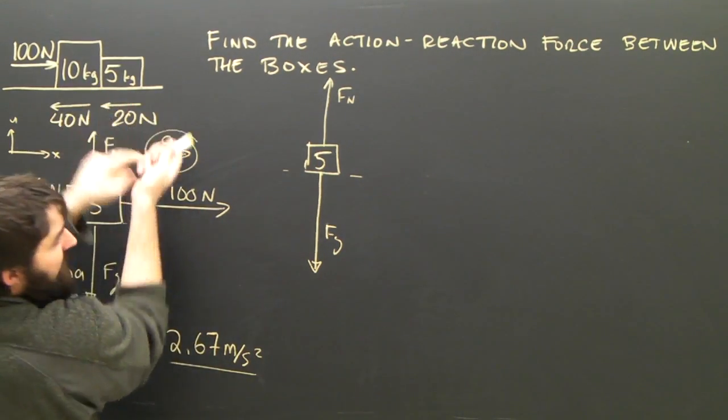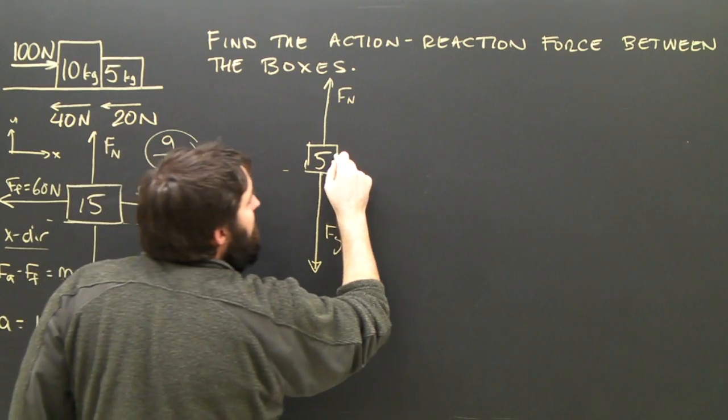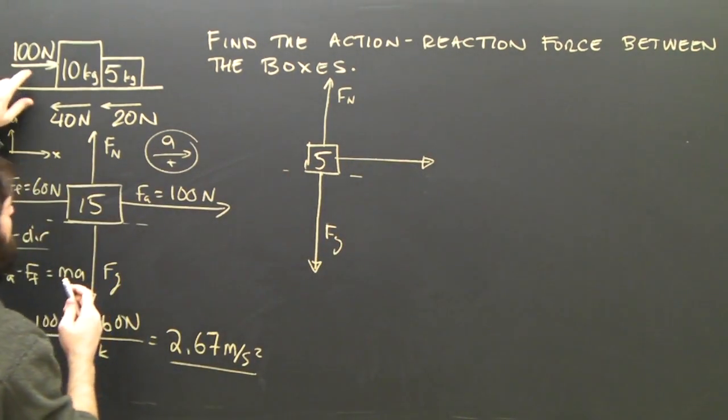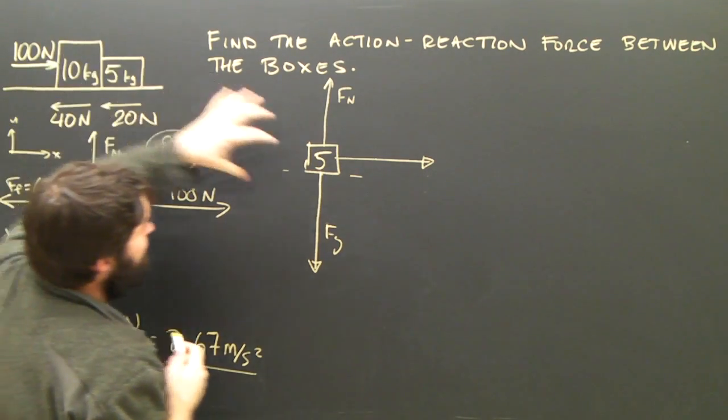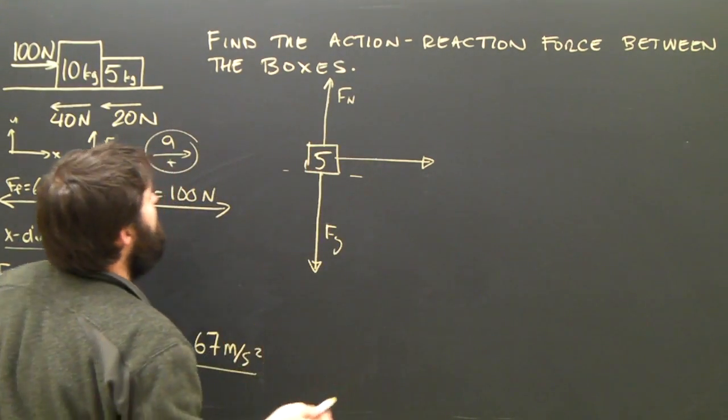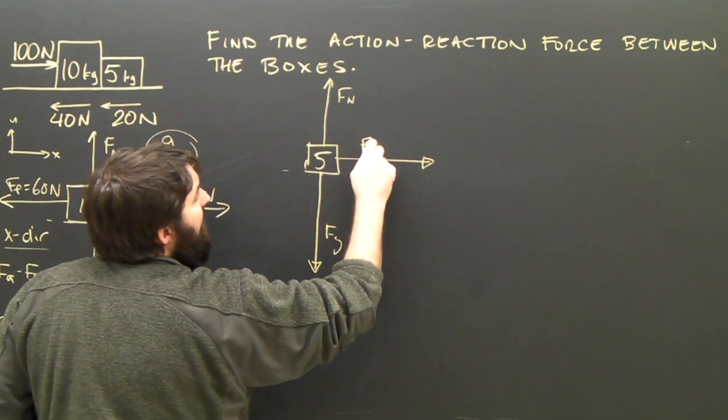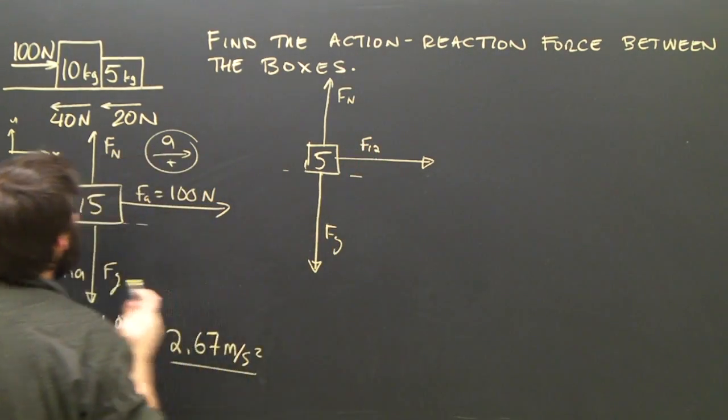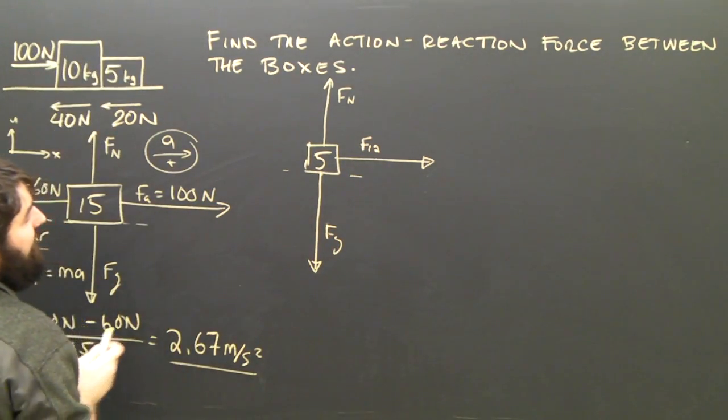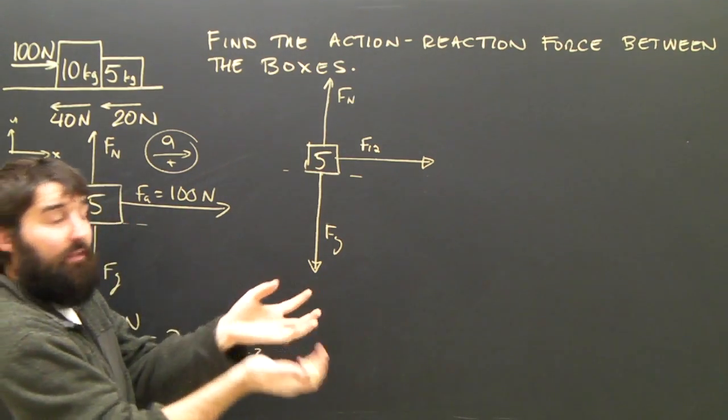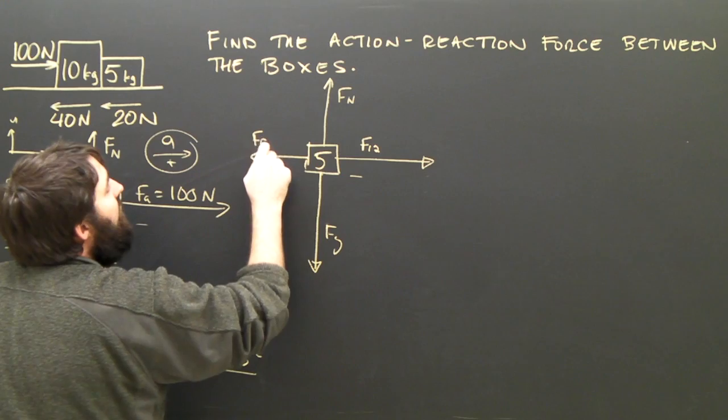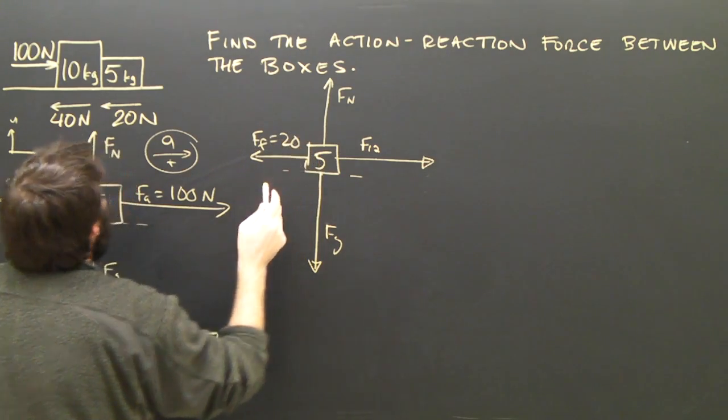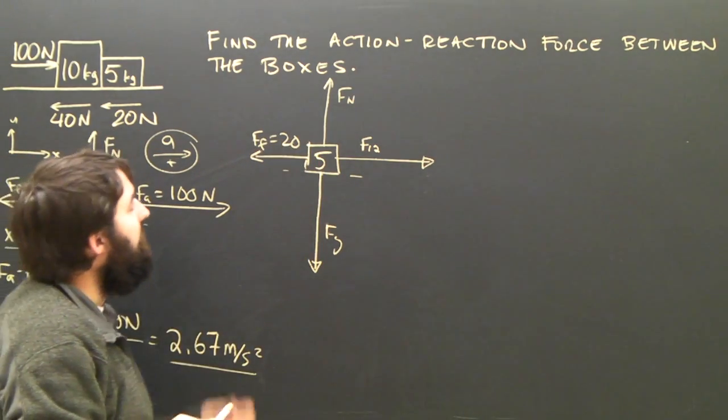What other forces are acting on the 5 kilogram box? The 10 kilogram box is pushing it to the right. This is not the applied force - that's being applied to the 10 kilogram object. The force that the 10 kilogram object applies to the 5 is different. I'll call it F1,2, the force that the first box applies to the second. The only other force that's acting on the 5 kilogram box is friction, and it is 20 newtons, as given in the diagram.